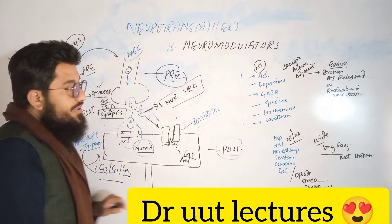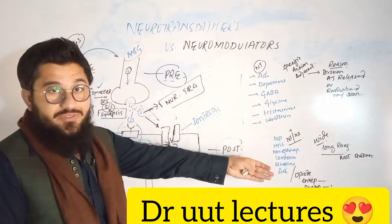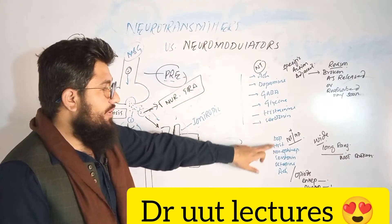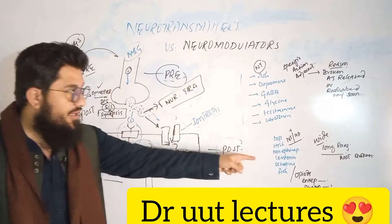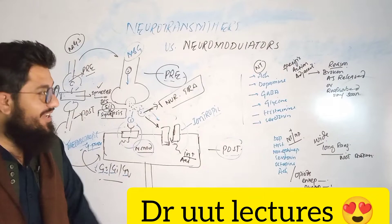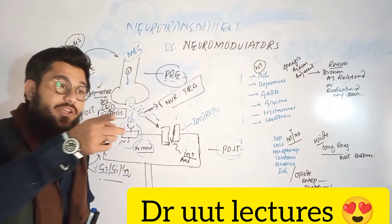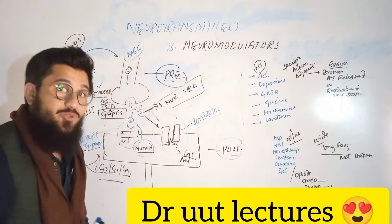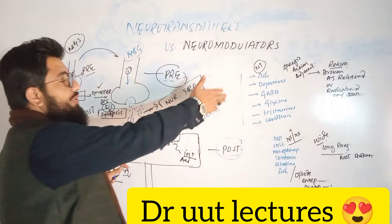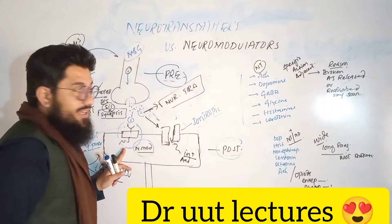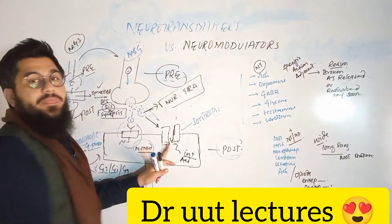You may notice some repetition in the examples: dopamine, histamine, norepinephrine, serotonin, and acetylcholine appear on both lists. This is because certain chemicals can be both neurotransmitters and neuromodulators. If they are interacting with G-protein or metabotropic receptors, they are neuromodulators. If they are interacting with ionotropic receptors, they are neurotransmitters. The same chemical can perform both roles.